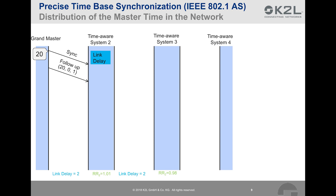The follow-up message contains three information fields. The first field indicates in grandmaster time when the grandmaster has originally sent out its sync message. The second field contains the delay between the sync message of the grandmaster and the sync message of the considered device — as the considered device at the moment is the grandmaster itself, this value is zero. The third item is the so-called rate ratio, which is the ratio of the master clock speed and the clock speed of the current device. Again, as the considered device is the grandmaster itself, the rate ratio is one. After some processing time, also called residence time, time-aware system 2 in turn sends out a sync message to the connected time-aware system 3. The question to be answered is: at what time, in grandmaster time, was the sync message sent?